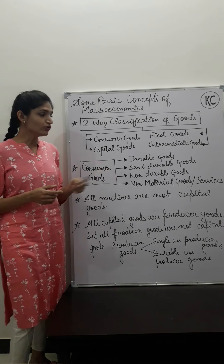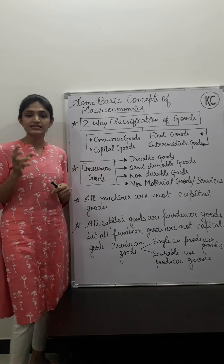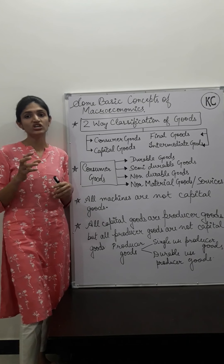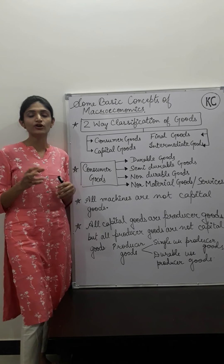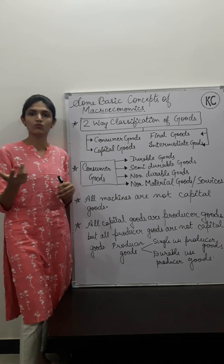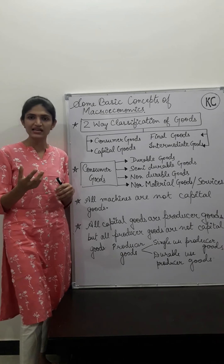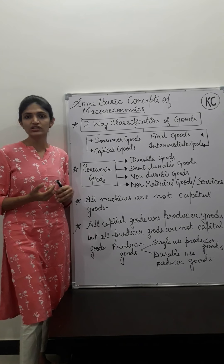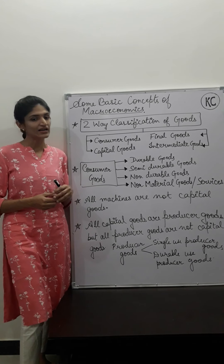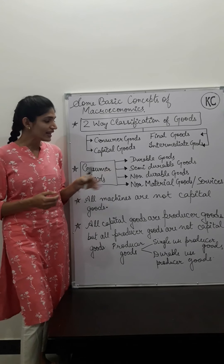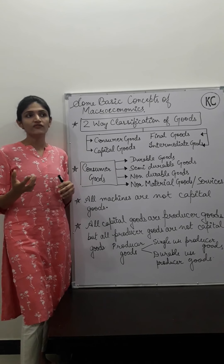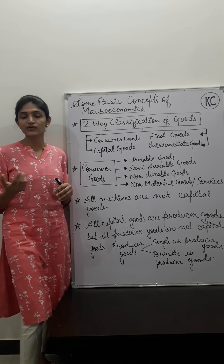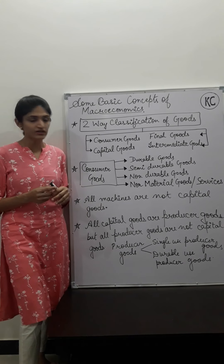Second is semi-durable goods. Semi-durable goods are used for either one year or just more than that. If you use a good for around one year or slightly longer duration, they are called semi-durable goods. Examples include clothes, furniture, and crockery.